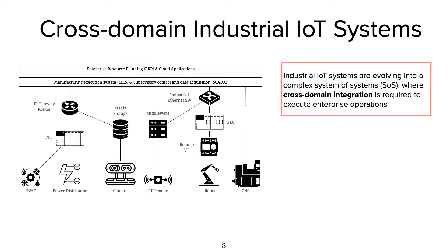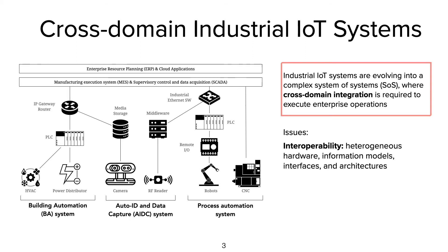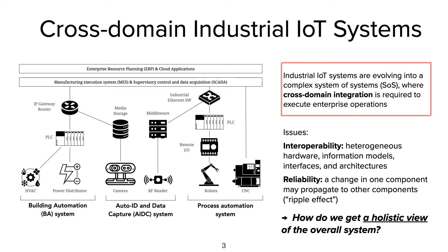Given the increased connectivity of the components in the systems, we can integrate systems of different domains, forming a cross-domain system of systems. For example, building automation, AIDC, and process automation systems can talk to each other to execute enterprise operations. But we constantly suffer from interoperability issues due to the heterogeneity of the components involved. Another issue is reliability — since they are so complex, if we make any change in one component it is hard to speculate what the change will bring about in other components, especially in different domains. So we need a way to have a holistic view of the overall system's provenance information.